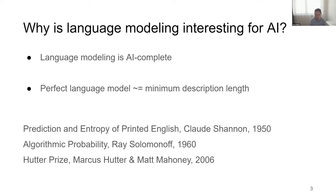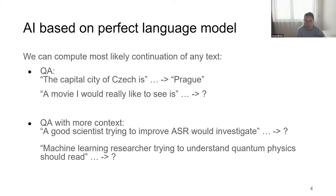The state of the art at the Hutter Prize today is basically a combination of n-grams and recurrent network language models. It can actually be shown — I have a chapter about it in my PhD thesis — that language modeling and data compression are essentially the same problem if you care about accuracy. If you care about speed, many compression algorithms sacrifice accuracy, making it a different problem.